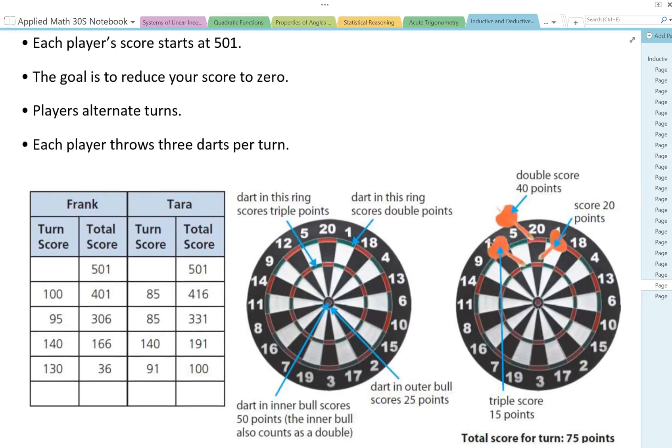Now if you look at the board it says a dart in this ring scores triple points and that's right here. So we're looking at this ring all the way around. That's a triple point.